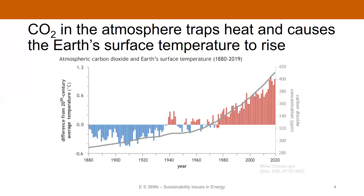Years coded blue are below that average and years that are red are above that average. We've been above average since the late 1970s and the trend continues upward with some variation from year to year. The problem is, as we keep putting more and more carbon dioxide into the atmosphere, the surface temperature is going to warm with a lot of unpredictable consequences as far as the climate goes.